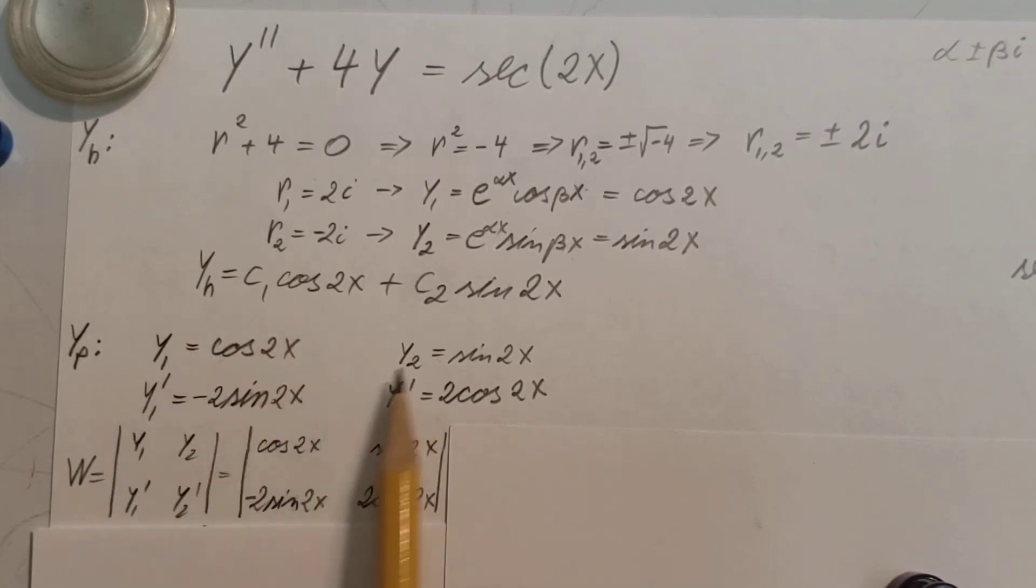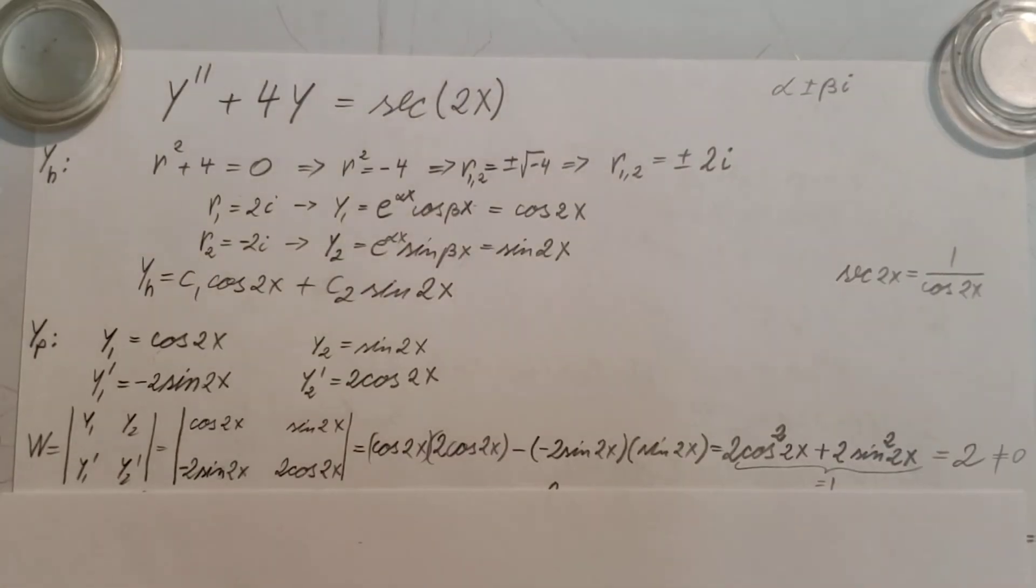Then let's go ahead and plug it into the Wronskian right here. This is a determinant, which means that we're going to calculate it as this times this minus this times this. Now that's going to be equal right here.